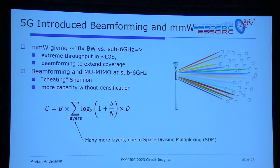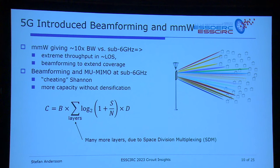5G introduced beamforming at millimeter wave frequencies. Why move up to millimeter wave? To find bandwidth and more capacity — there's about 10x the bandwidth compared to sub-6 GHz. We can have extreme throughput in line of sight, but it's very difficult to penetrate walls, buildings, even trees. Therefore we also need beamforming to extend coverage — focusing the energy in the right direction.